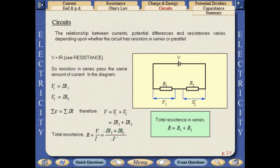The relationship between currents, potential differences and resistances varies depending upon whether the circuit has resistors in series or parallel.